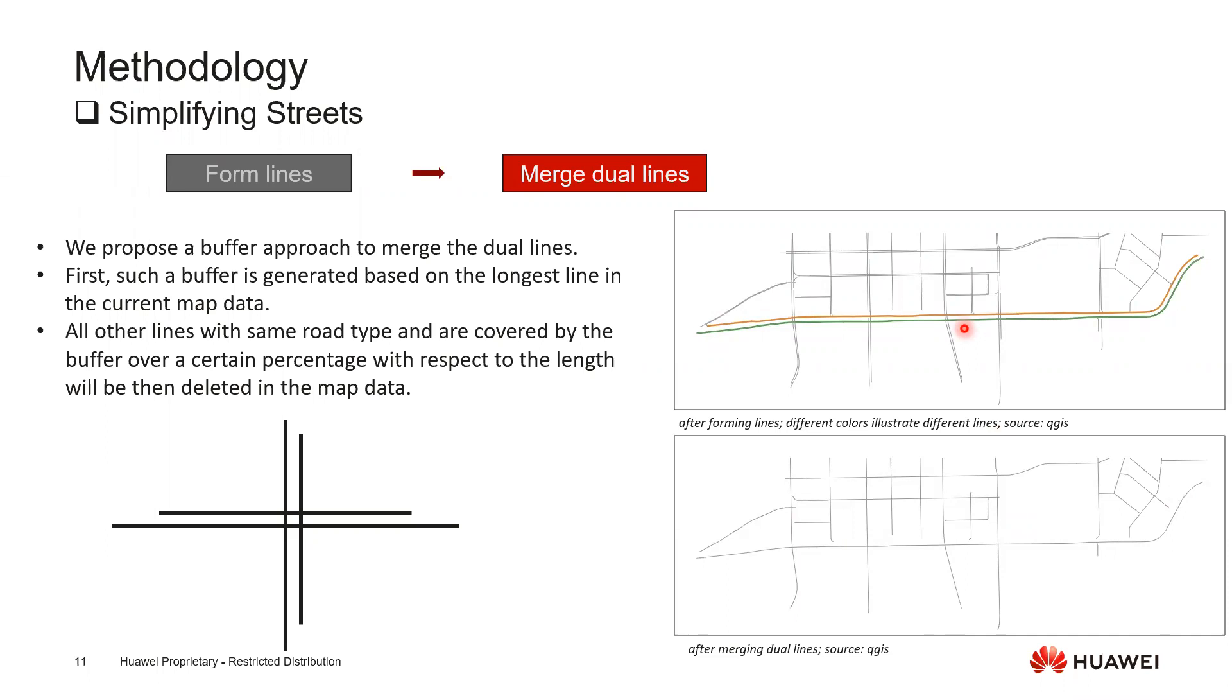But the problem here is how should we identify that those two lines should be merged together? In this case we propose a novel approach we call it the buffer approach. Still, let's follow the animation. At the very first we will locate the longest line in the road network and we will generate a polygon along with this line with a configurable width - this is the so-called buffer. Then if there are other lines which are covered by the buffer to some extent, we will merge this line or delete this line and add the attribute of the line into the remaining lines.